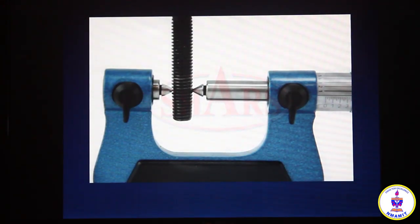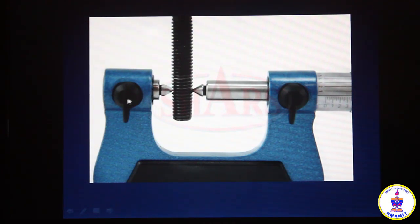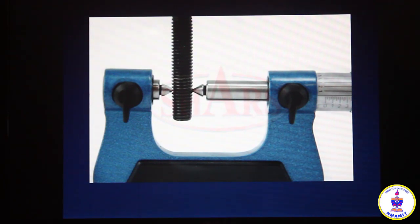The V anvil is always placed on the left side while the conical anvil is always placed on the right side on the spindle. There are two locknuts: one locknut holds the V anvil and conical anvil, and the conical anvil has to be set to zero. One locknut is used to set zero, and the other locknut is used to finally tighten and take the readings.